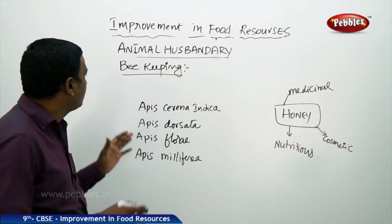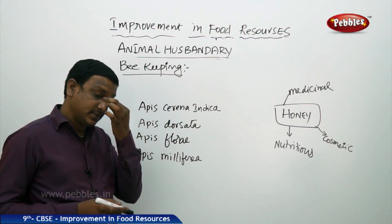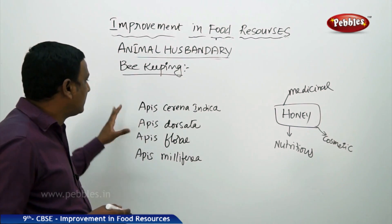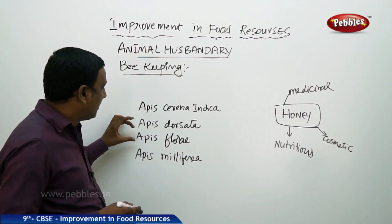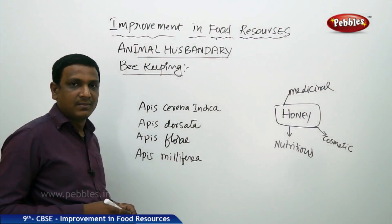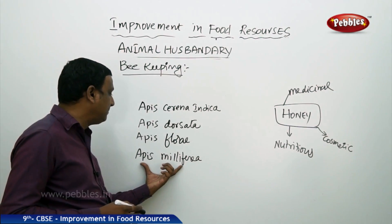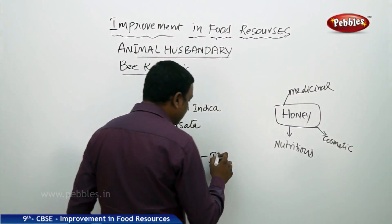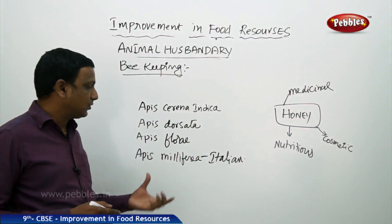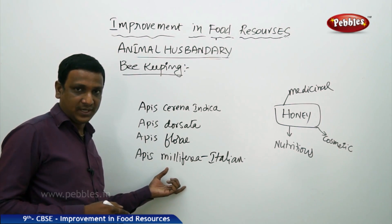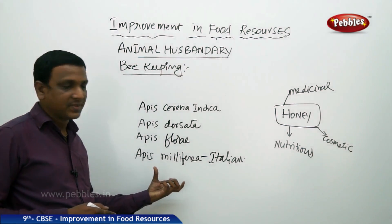Beekeeping shelves can be set up in fields or farms to collect honey. The different local varieties of honey bees are Apis cerana indica (the Indian bee), Apis dorsata, and Apis florae. However, these local varieties have less honey collection capacity compared to Apis mellifera, an Italian variety which has very good honey collection capability. This variety has been introduced here to collect a good amount of honey.